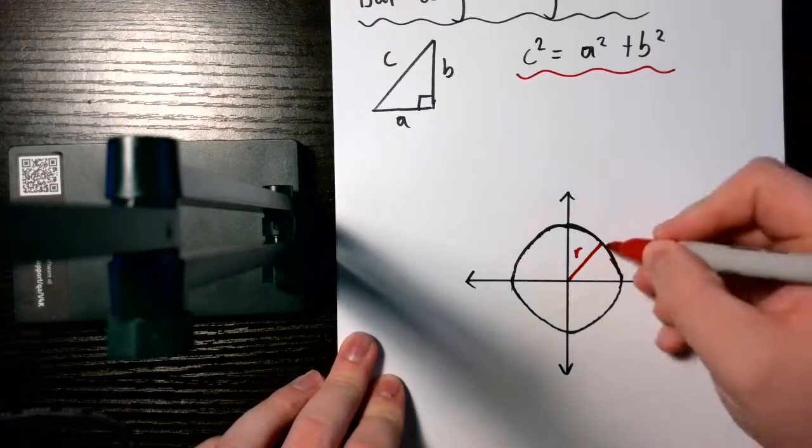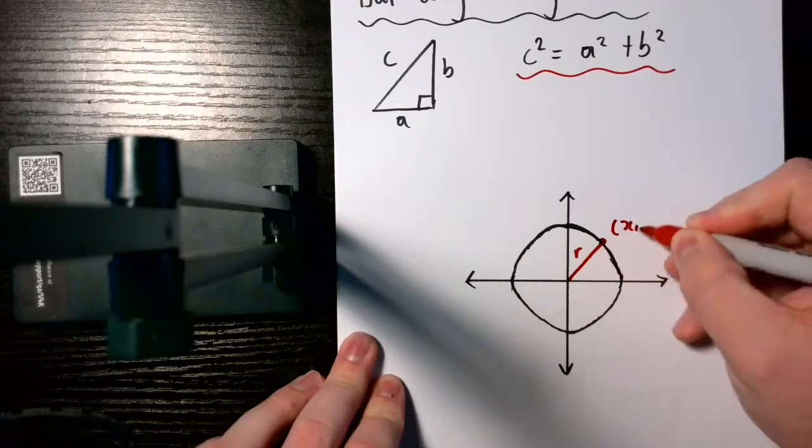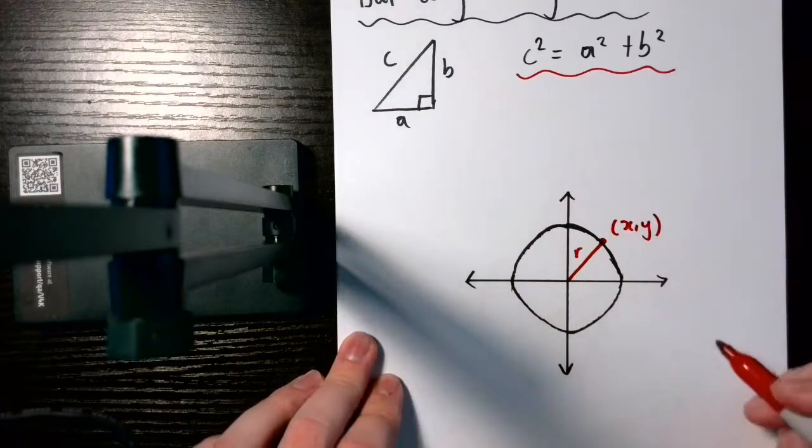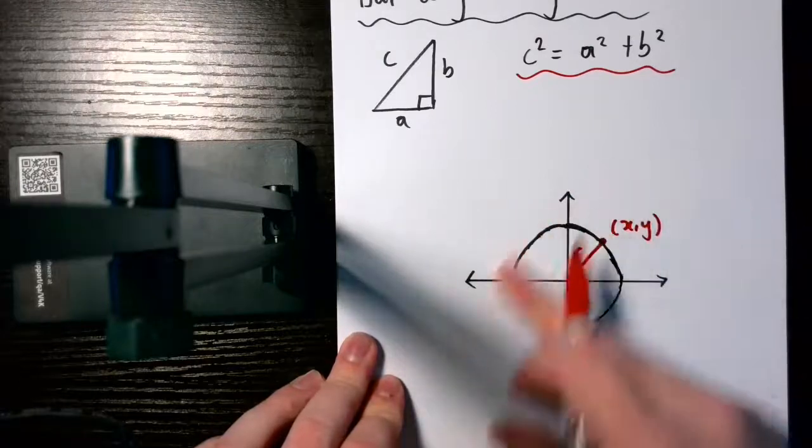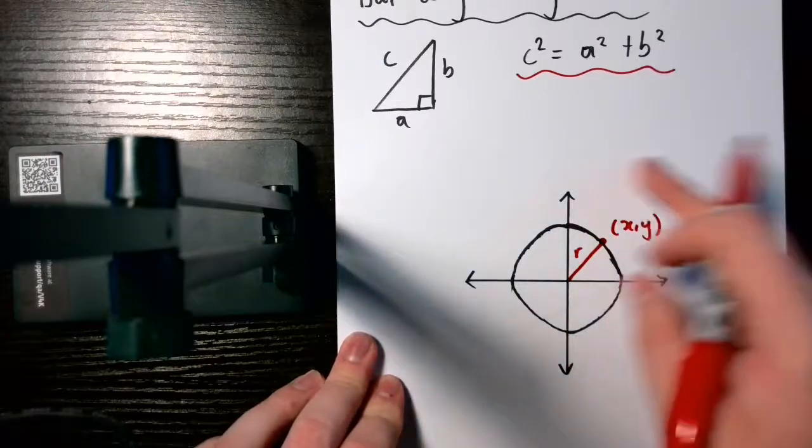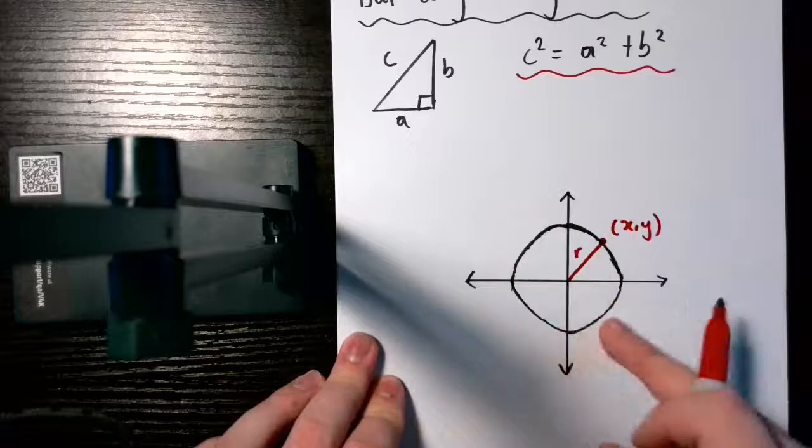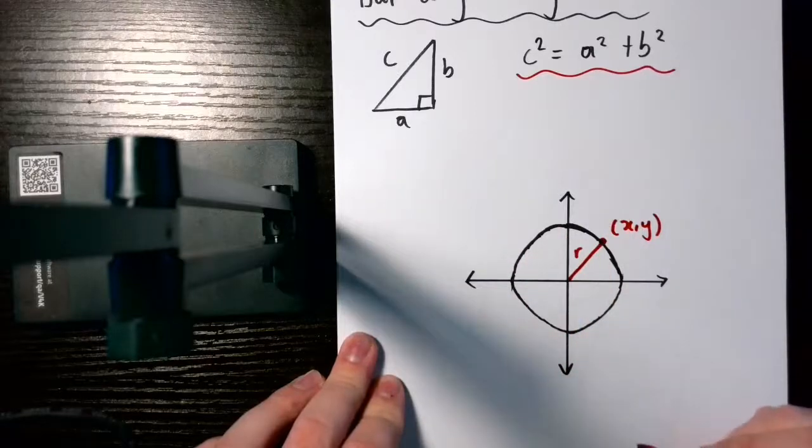And I can do that. So, I'm going to label this point, and I'm just going to call it (x,y). The reason why I call it (x,y) is because I want this to work for any point around the circle, not just one. We could put numbers in here, but we want it to work for any point, so we use letters.